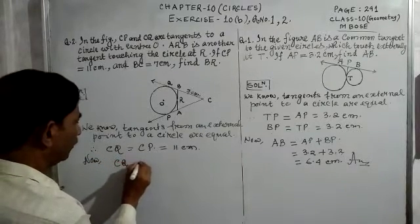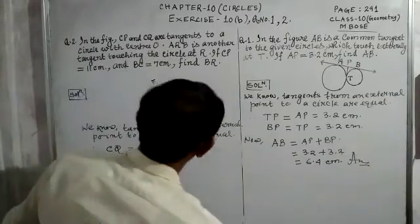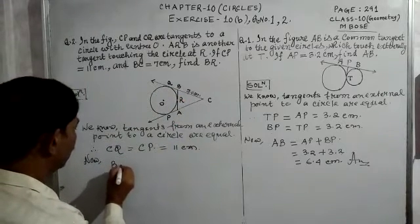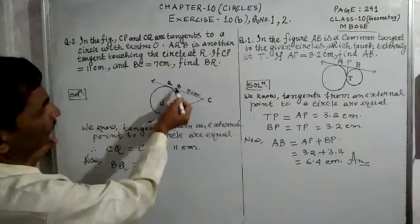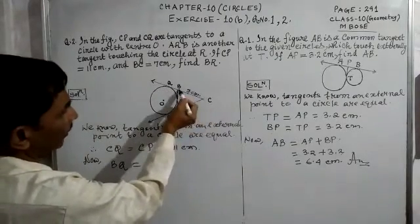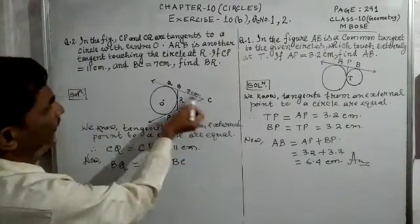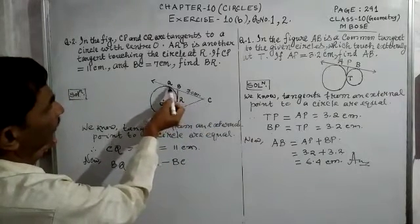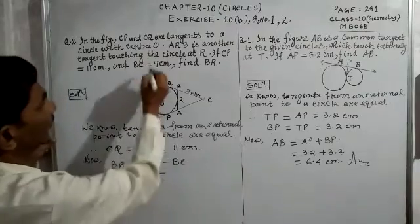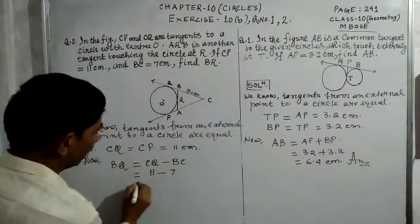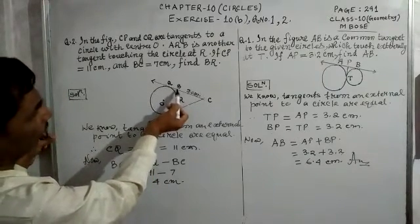Now let us find BQ. BQ is equal to CQ minus BC. Substituting the values: CQ is 11 centimeters and BC is 7 centimeters. So BQ equals 11 minus 7, which equals 4 centimeters.